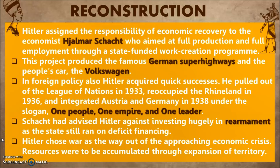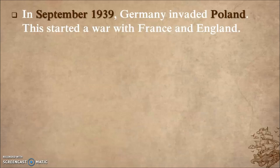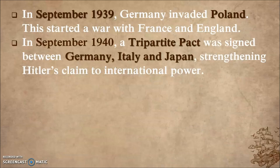In this process, let's discuss how the Second World War started. Hitler pulled out of the League of Nations, integrated Austria, and then in September 1939, Germany invaded Poland. This started a war with France and England. In September 1940, a Tripartite Pact was signed between Germany, Italy, and Japan — a pact involving three countries, making them the Axis Powers of the Second World War.